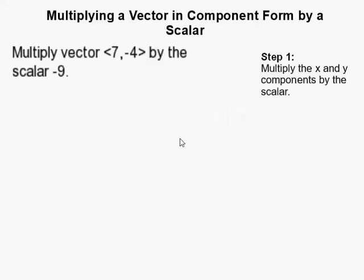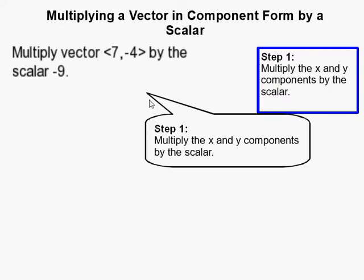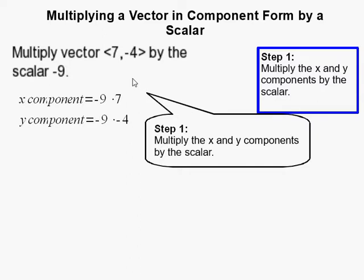How to multiply a vector when it's in component form by a scalar — it's actually a very simple process. You simply multiply the x value by the scalar and the y value by the scalar. So in this case,